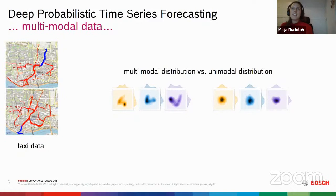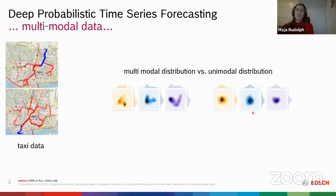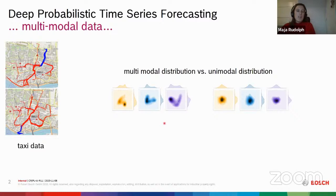Many real world datasets, for example taxi trajectories shown on the left, are very highly multimodal. To be explicit about what I mean by multimodality: on the right I have three distributions that are unimodal — if you approximate them with a Gaussian it would cover them kind of well. In contrast, multimodal distributions have multiple areas of high probability mass with low mass in between. If we approximated this with a Gaussian, we would either cover just one mode or have an over-dispersed approximation that also places mass in areas of low density.